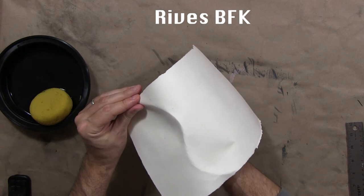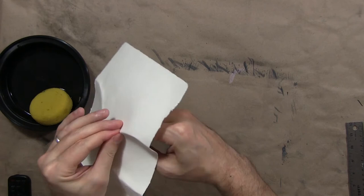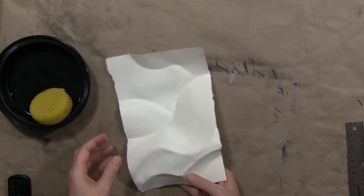Here's Reeves BFK. Printmakers know that this is an etching paper and it can sit in water for a long time. It doesn't wrinkle a lot. With the wet folding, it's softer but there's also less wrinkling.